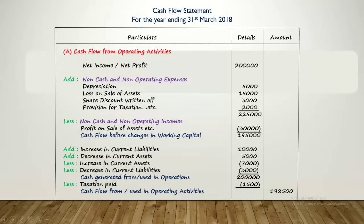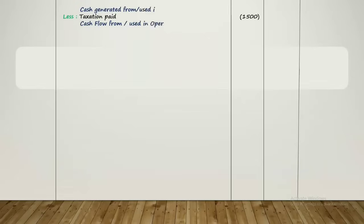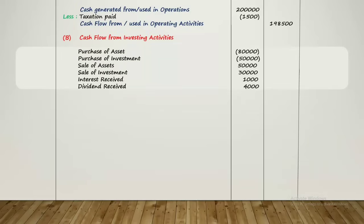Next is cash flow from investing activities. Here, transactions related to acquisition and disposal of assets come in. All transactions that lead to inflow of cash are added, and those that lead to outflow of cash are subtracted. Examples include purchase of assets, purchase of investments, sale of assets, sale of investments, interest received, dividend received, etc.